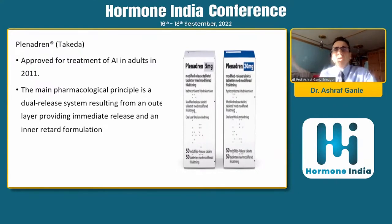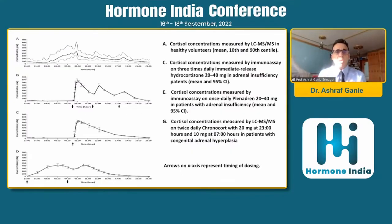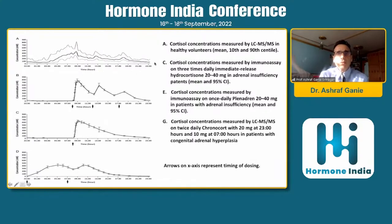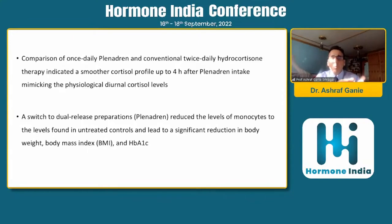To address compliance issues, hydrocortisone has been converted into slow-release forms. Plenadren, approved in Europe and by the FDA in 2011, combines an immediate-release component and a sustained-release preparation. Comparing its pharmacokinetic curve against three-times-daily hydrocortisone and the normal cortisol curve shows that Plenadren — given once daily — almost mimics the normal physiological cortisol pattern, overcoming the compliance issue of multiple daily dosing.